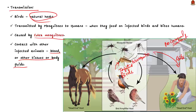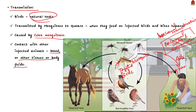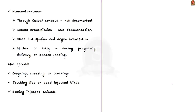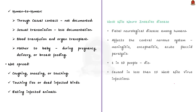Documented information about sexual transmission is also limited. The virus is also spread by blood transfusion, organ transplantation, and from mother to baby during pregnancy, delivery, or breastfeeding. It is not spread through coughing, sneezing, touching live animals, handling live or dead infected birds, or eating infected animals. Direct sharing of blood or body fluids is required for transmission.